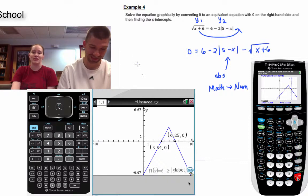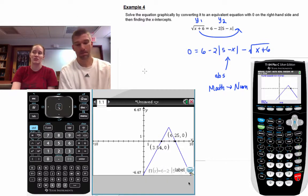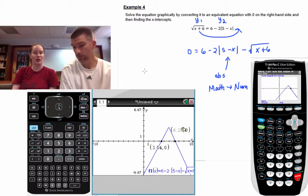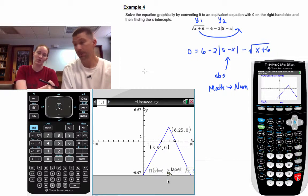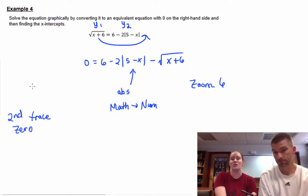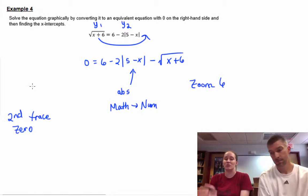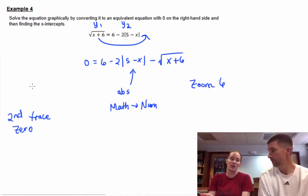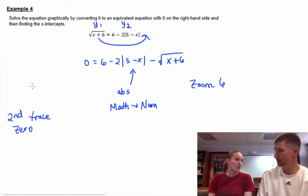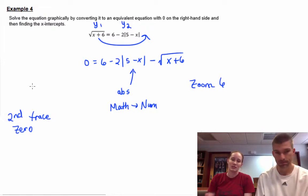Whenever you do this on either calculator, it's going to ask you for either two or three things. It's going to ask you for a left bound, so you want to move to the left of a zero—or lower bound, depending on your calculator. Then it's going to ask you for the other side, so you have to move the cursor to the other side of the zero. On TI-83s and 84s, it asks you to guess. I don't know why—I think it's an awkward in-between step. You can just press enter when it says guess, or move it closer to the zero.